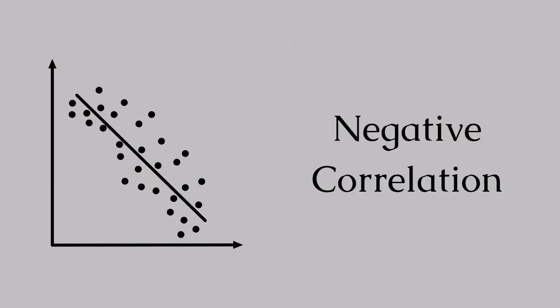Negative correlation: as one variable increases, the other decreases. Like exercise and weight — as you exercise more, typically weight goes down. Exercise and weight are negatively correlated.